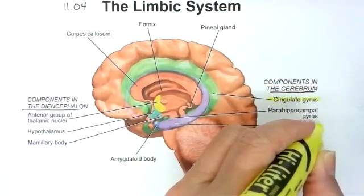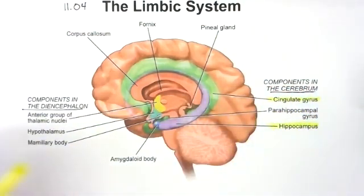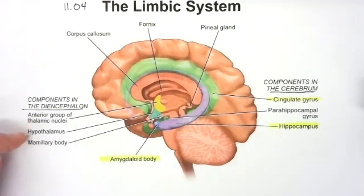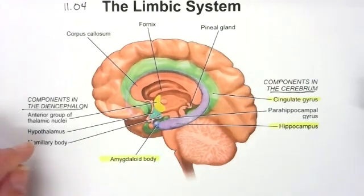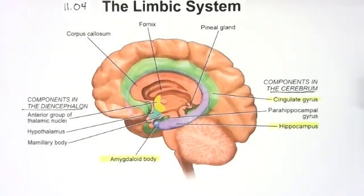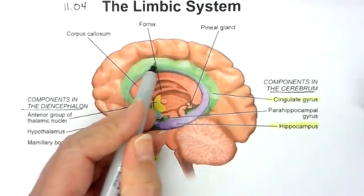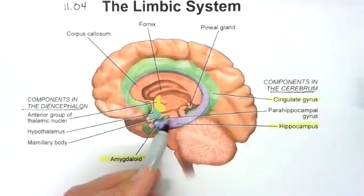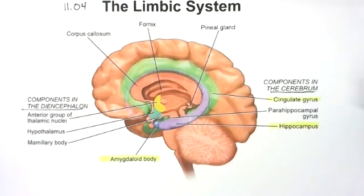I want you to know the cingulate gyrus, the hippocampus, and the amygdaloid body. We're not going to talk about the rest of these. We'll save the thalamus and hypothalamus for when we talk about the diencephalon, skip the mammillary body, and not worry about the parahippocampal gyrus. The parts I highlighted are the larger parts of this limbic system: cingulate gyrus in green, hippocampus in lighter purple, and the amygdaloid body in darker purple.